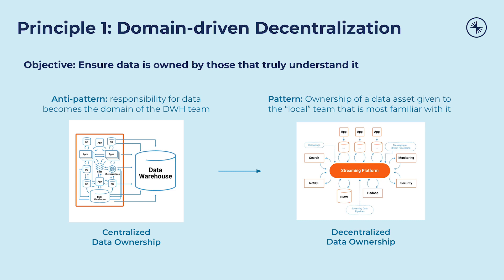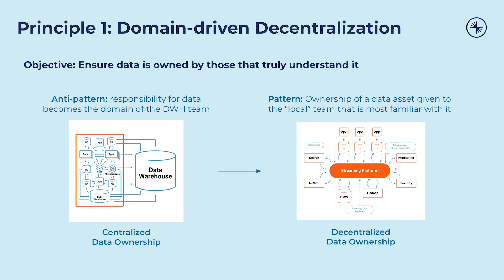The centralized approach contrasts with the decentralized approach of the data mesh. In a data mesh, ownership of a data asset is given to the local team that's most familiar with it — its structure, its purpose, and its value. In this decentralized approach, there are many parties working together in a big enterprise, all exchanging data through the mesh. The parties that own the data and the responsibility to be a good steward of that data are both explicitly defined and known to the rest of the organization. That owner is typically co-located in the part of the organization where that data originates — that's what we call the data's domain.